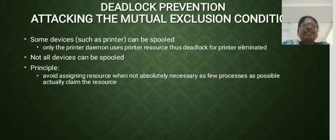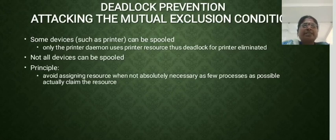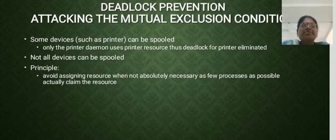Deadlock prevention by attacking the mutual exclusion condition. Some devices, such as printers, can be spooled. Only the printer daemon uses the printer resource; thus, deadlock for the printer is eliminated. Not all devices can be spooled. The principle is to avoid assigning resources when not absolutely necessary, and keep as few processes as possible actually claiming resources.